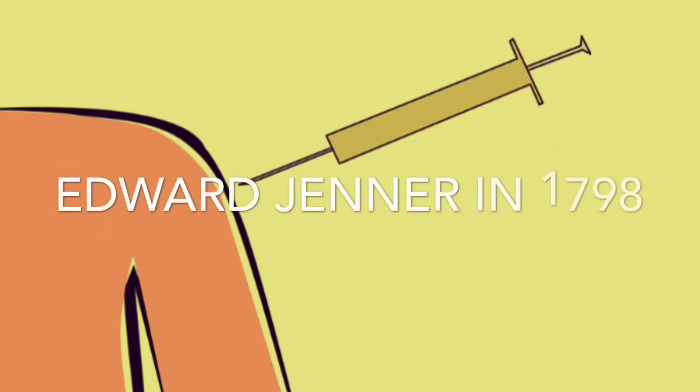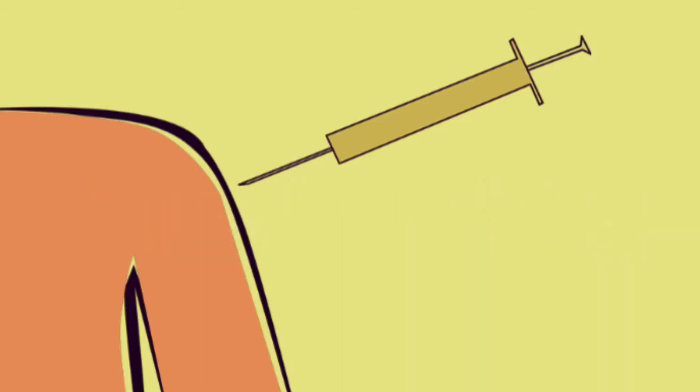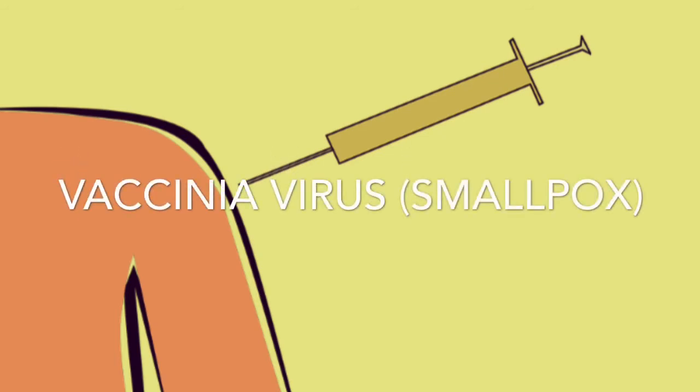Vaccine was developed by Edward Jenner in 1798. It was in 1796 when he inoculated or vaccinated a 13-year-old boy with vaccinia virus for smallpox. This boy later developed immunity to smallpox.